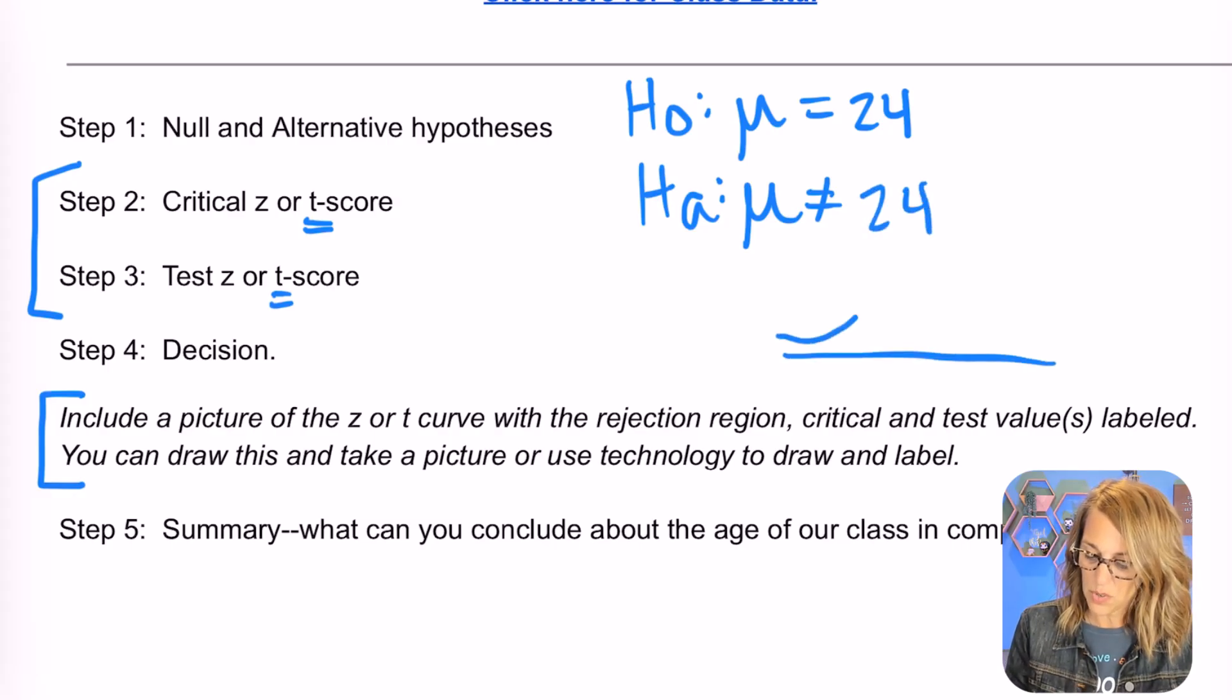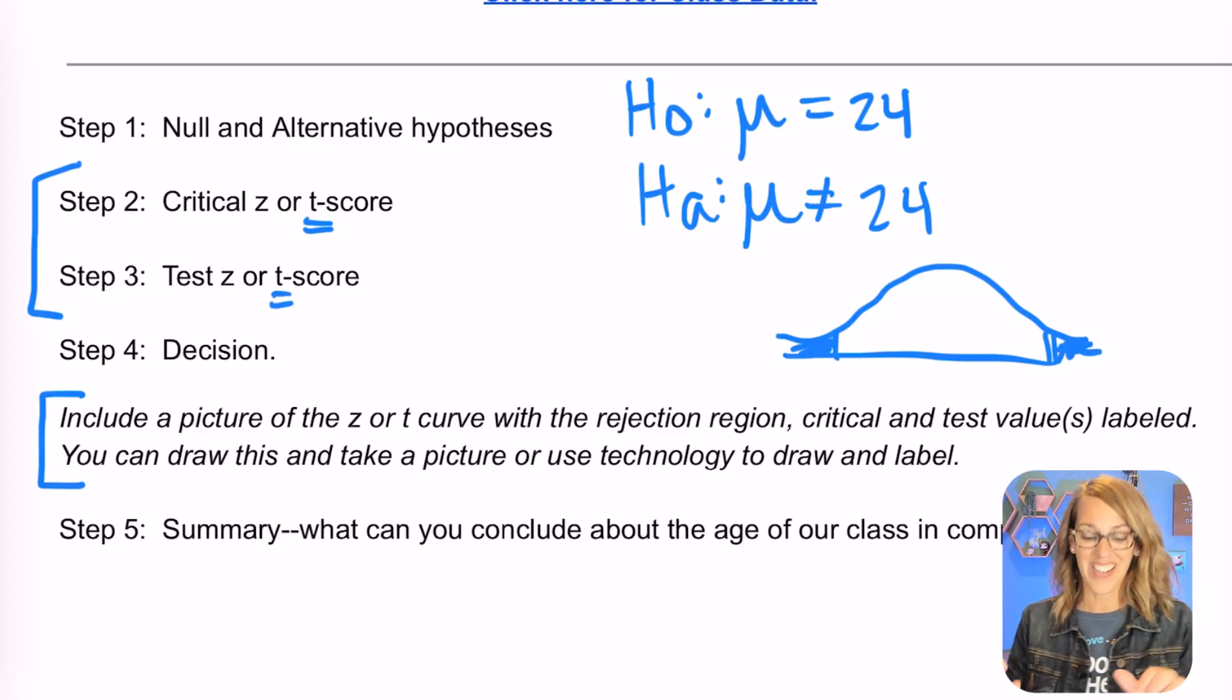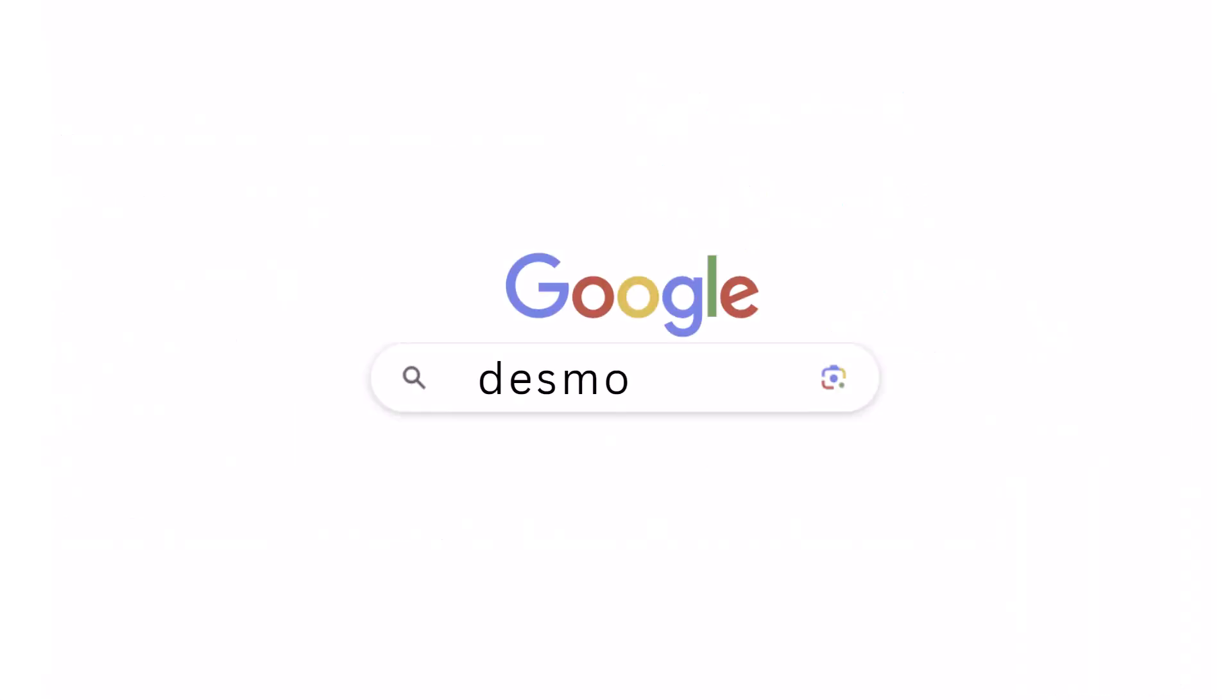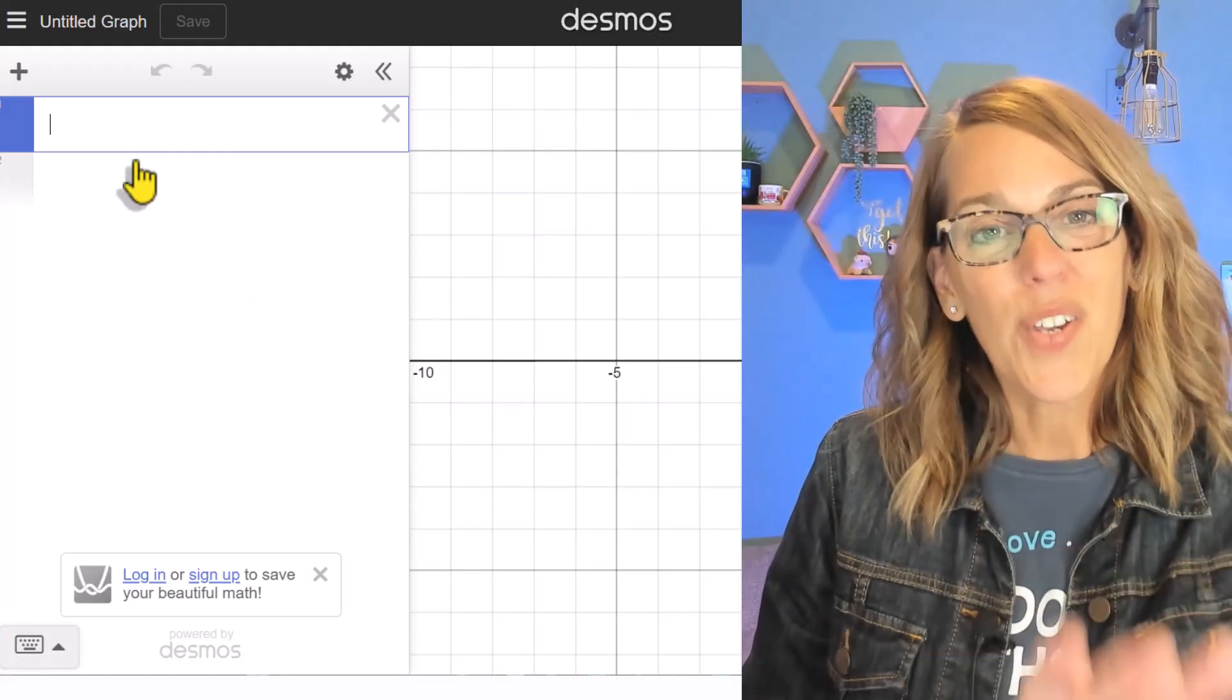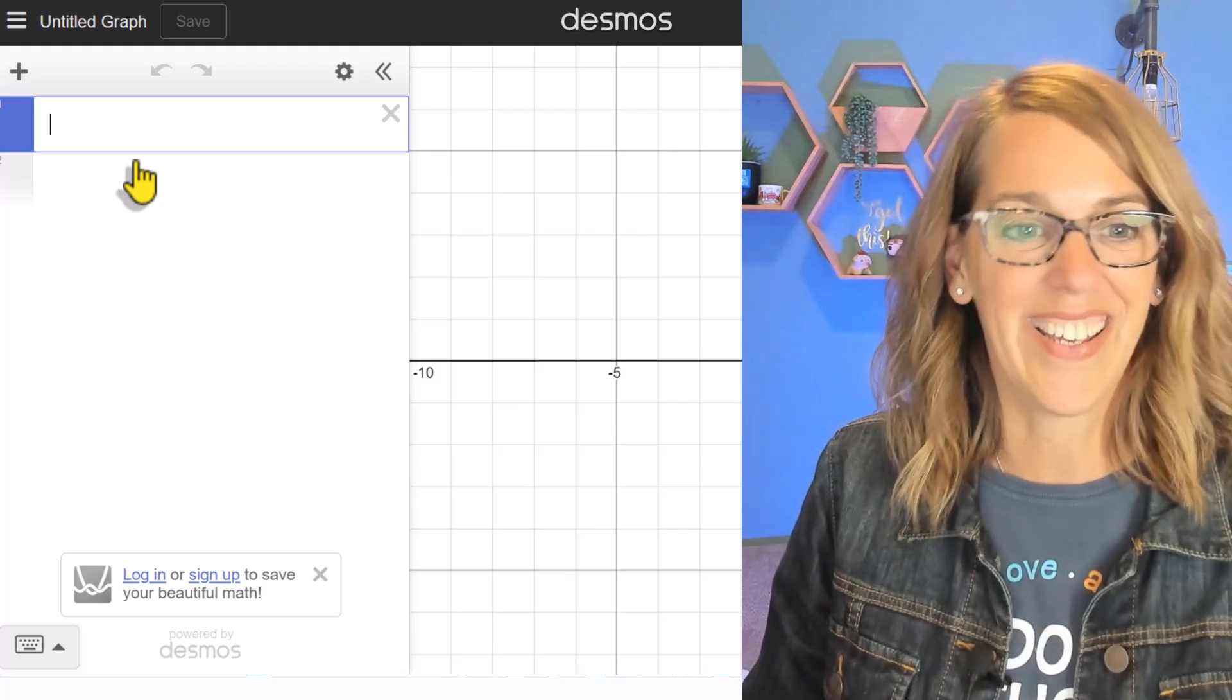That actually gives us a two-tail test. Desmos is going to do this way better than me with a rejection region on both ends. Let's do that test t-score next. I'm here at Desmos.com and I want to go to open that graphing calculator. I want to show you where it is and then we'll get our data in here.